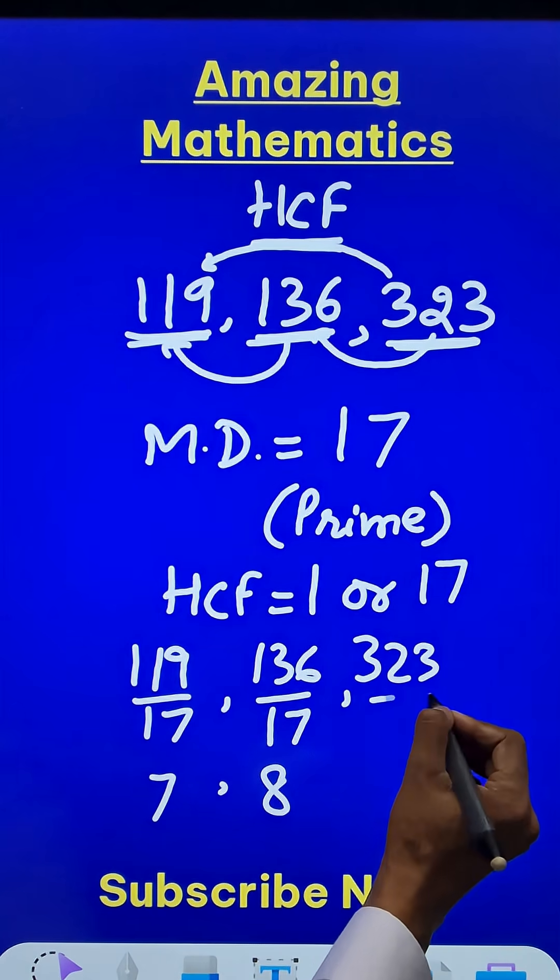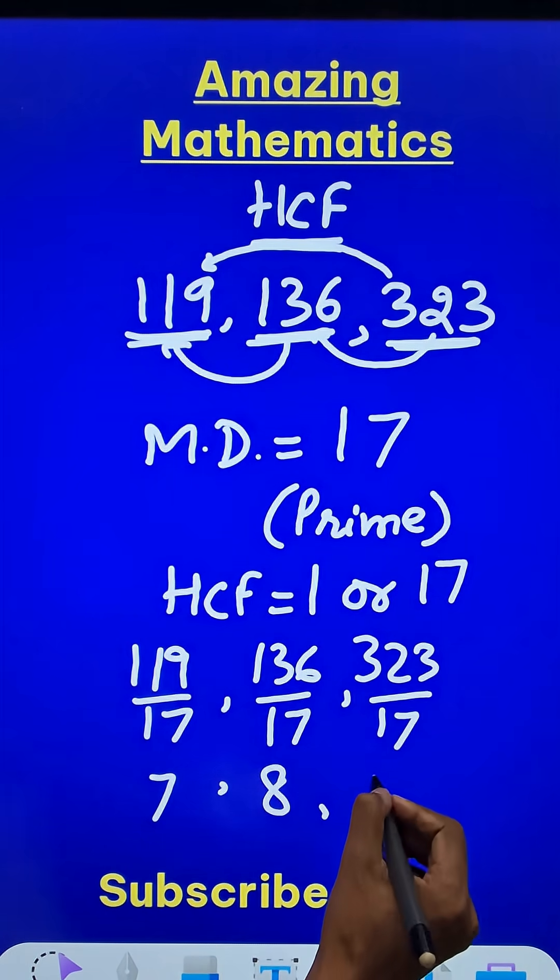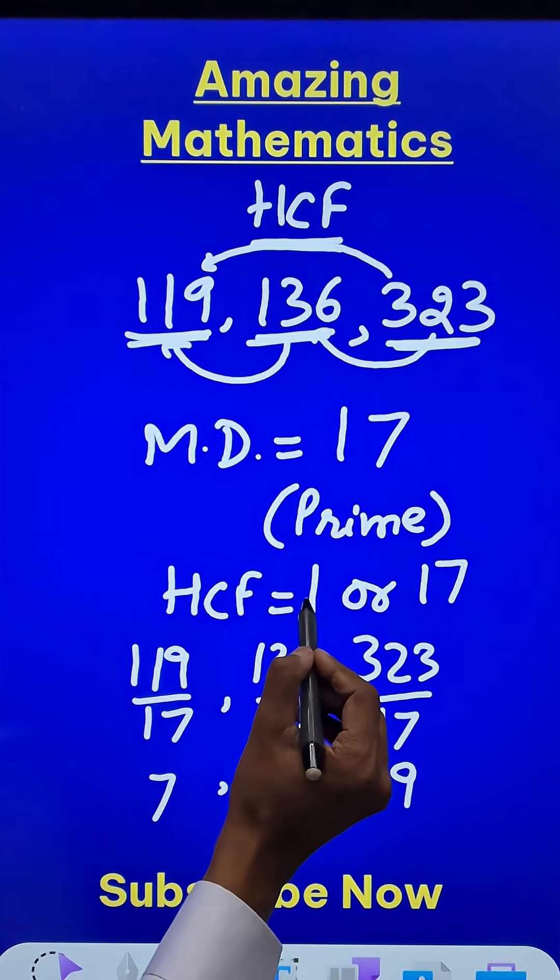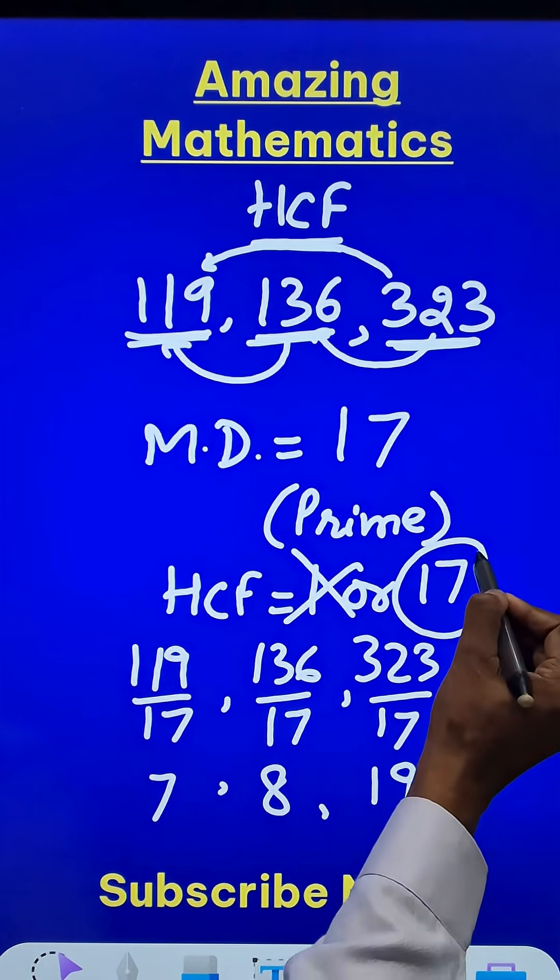And if you divide 323 by 17, you get the quotient as 19. Therefore, 17 divides all the three numbers, and so the HCF is not 1, it is 17.